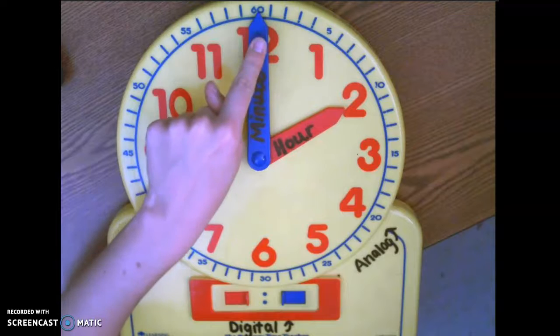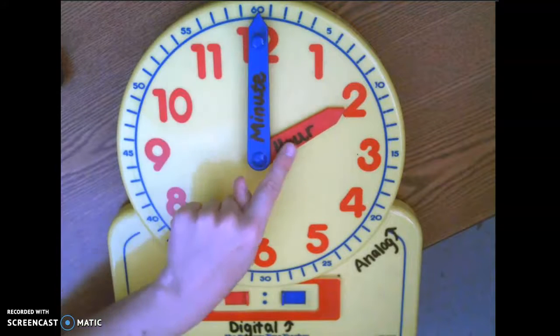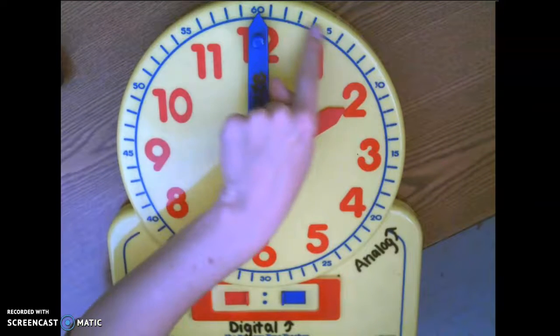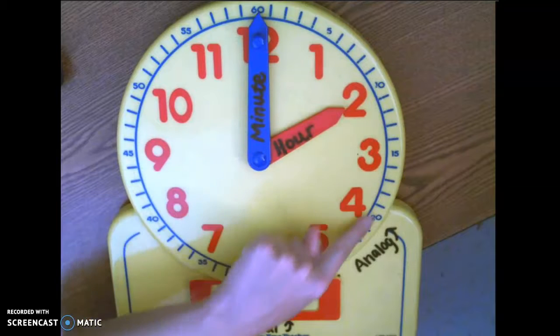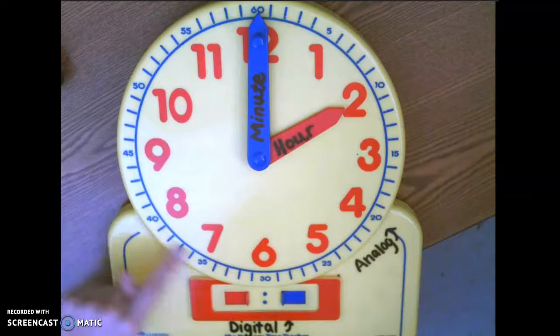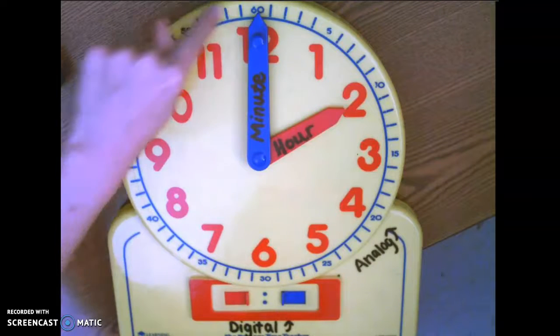And then the minute hand moves quicker than the hour hand and it tells us how many minutes have passed. And we have 60 minutes in one hour before we start the next hour.